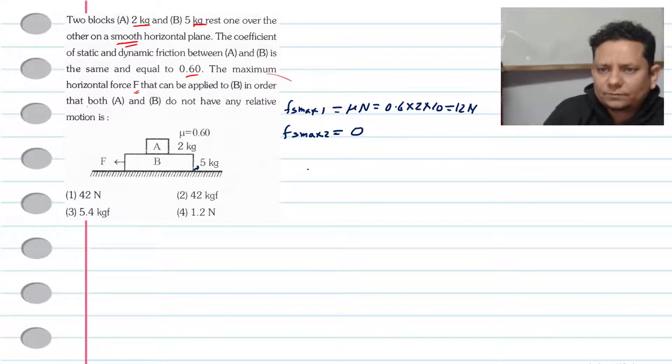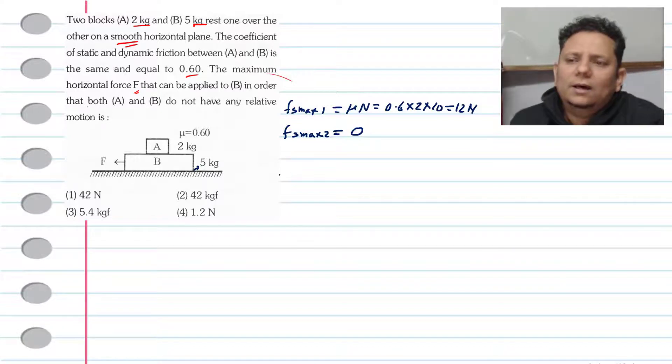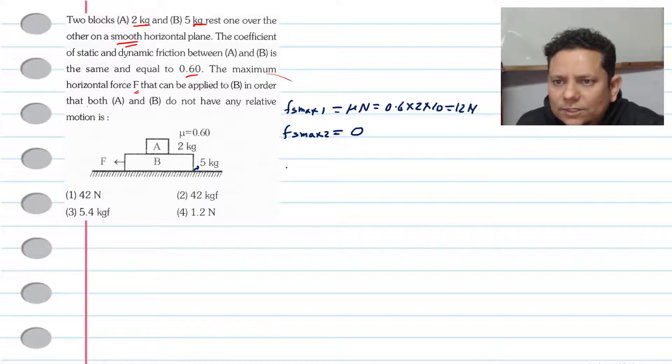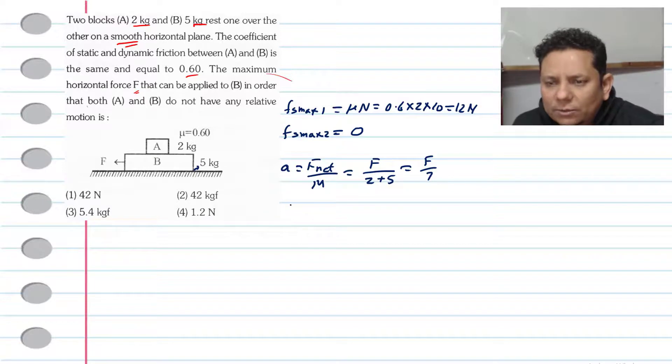Now let us assume that both A and B accelerate together with acceleration a. The acceleration possible here is related to Fs maximum value.